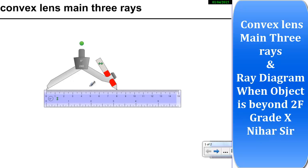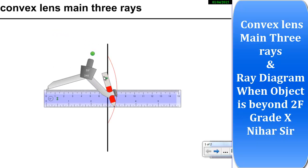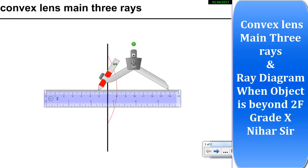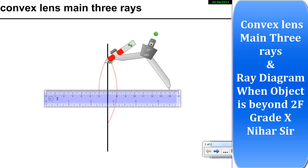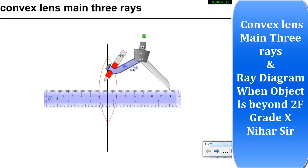To draw the convex lens you need to take any measurement, preferably an even number so that you can mark all the points perfectly. I will draw the imaginary or temporary line at seven, and then I will draw the convex lens arc on one side. Then I go to the other side and again draw the arc, keeping my pen on six centimeters so I can draw it perfectly. Now my convex lens is prepared.